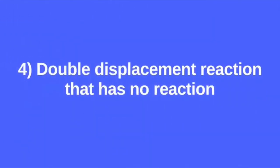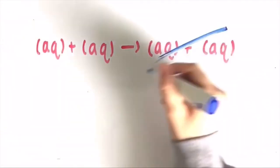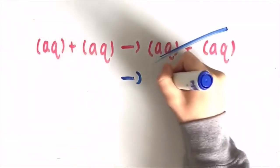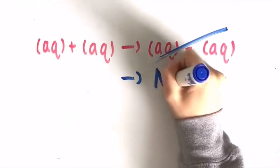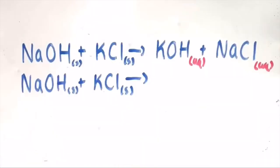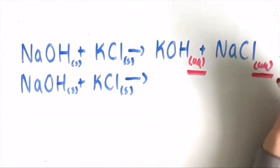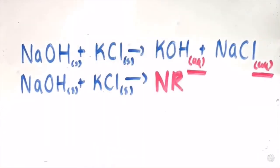Lastly, we have double displacement reactions that have no reaction. If the two products formed are both soluble, meaning they're both aqueous, then there is no reaction. For example, sodium hydroxide plus potassium chloride yields potassium hydroxide plus sodium chloride, but since both products are aqueous, there is no reaction.